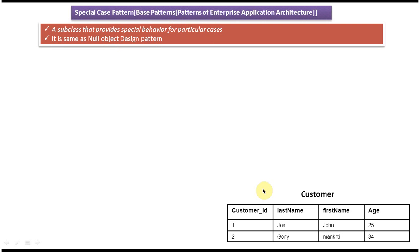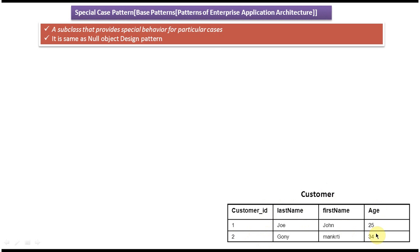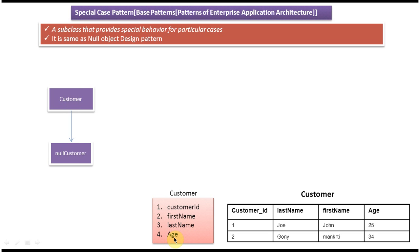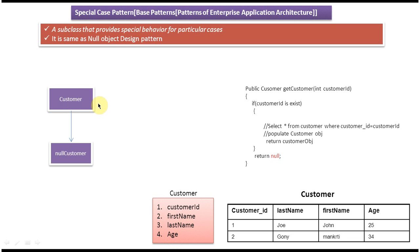To explain this, I have taken a customer table. There are four columns: customer ID, last name, first name, and age. The first row represents Joy's information and the second row represents Goni's information. If you want to create a class for this customer table, it will look like this: a Customer class with customer ID as int, first name and last name as string, and age as int or long.